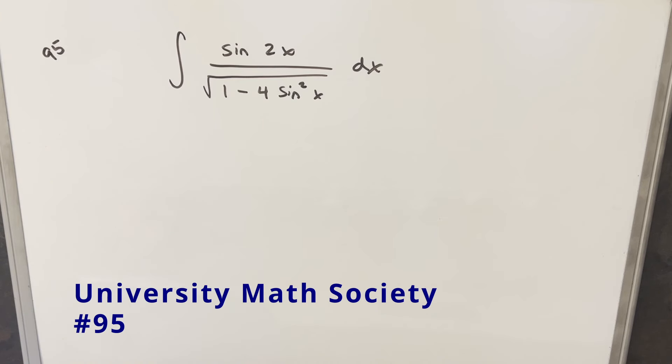We have here today an integral from the University Math Society, problem number 95. We have the integral of sine 2x over square root of 1 minus 4 sine squared x dx.